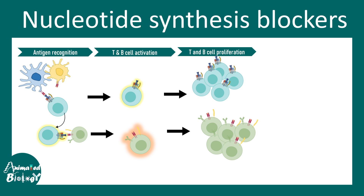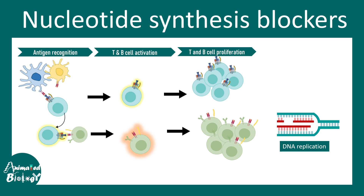T and B cell proliferation is a key event in this pathway. If proliferation can be blocked, the immune response is suppressed. Since any cell that divides must first replicate its DNA, the derivative of azathioprine incorporates into the DNA replication machinery and acts like a poison to block this process, thereby exerting its effect as an immunosuppressant.